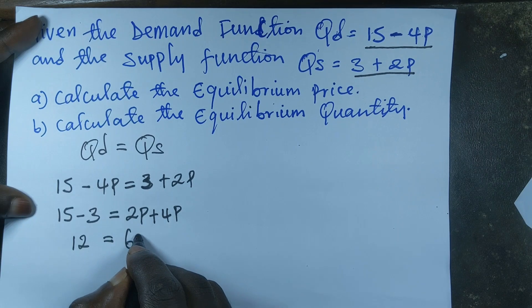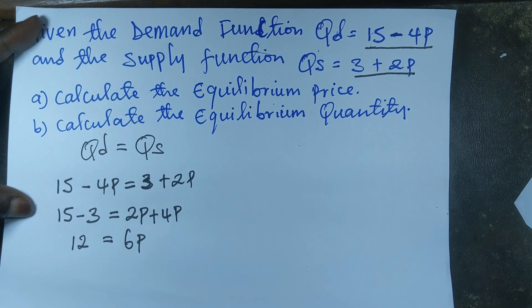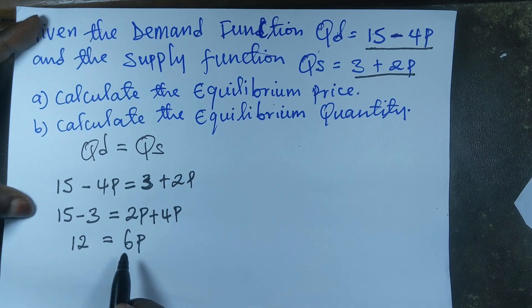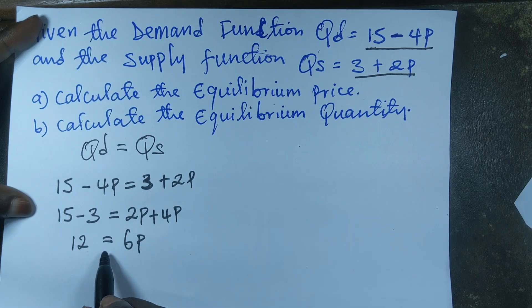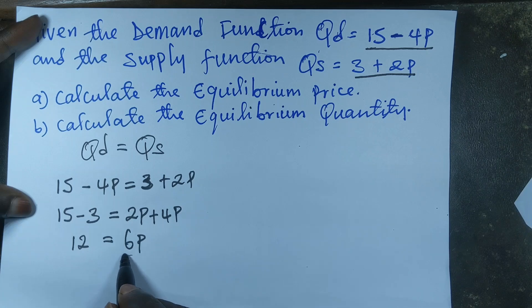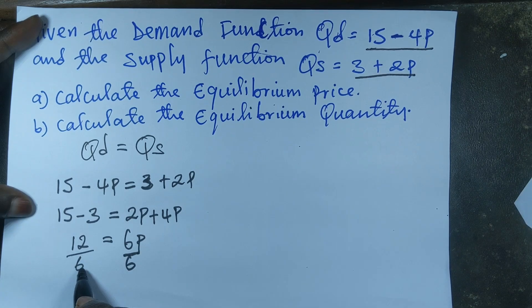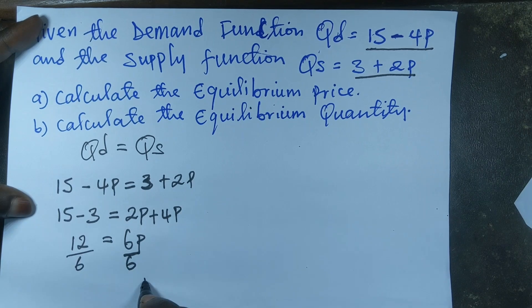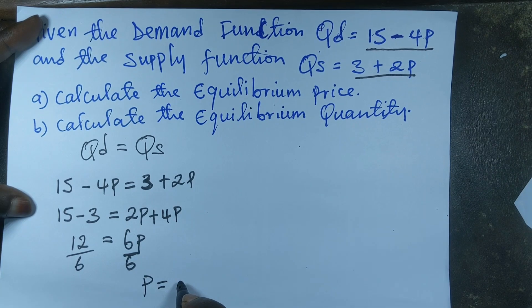What we need to do now is divide both sides by the coefficient of p to find the price. We divide both sides by 6, and we get p equals 2. That is the equilibrium price.